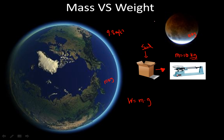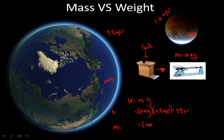The gravity of the moon is about 1.6 meters per second squared. So let's figure out how much this 10 kilogram box would weigh on Earth and on the moon. On Earth: 10 kilograms times 9.8 meters per second squared gives us a weight of 98 newtons. Newtons is the unit we use when we talk about weight. On the moon: 10 kilograms times 1.6 meters per second squared gives us about 16 newtons.